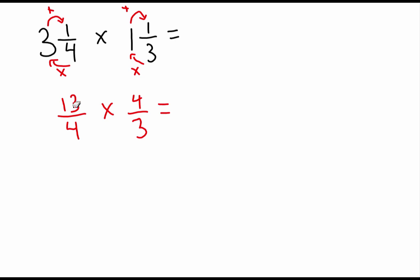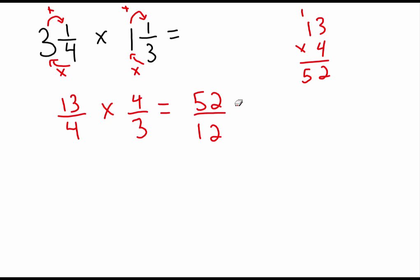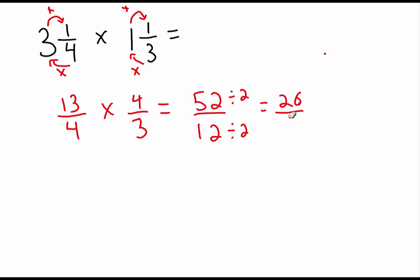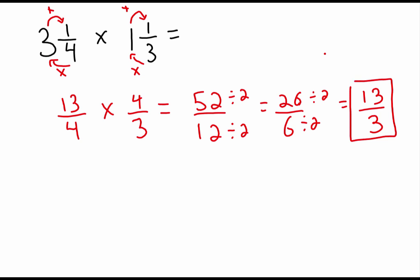We don't find common denominators — it's a waste of time. Multiply the numerators: thirteen times four gives you 52. Multiply the denominators: four times three gives you 12. To reduce 52 over 12, divide by two to get 26 over 6, then divide by two again to get 13 over 3.